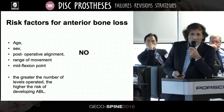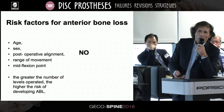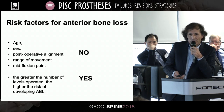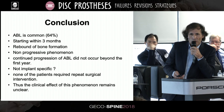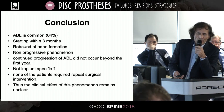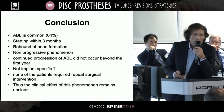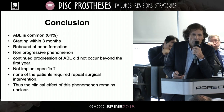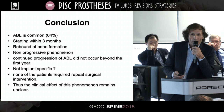There is no correlation with age, sex, post-operative alignment, or range of movement. However, the greater the number of levels operated, the higher the risk of developing ABL. In conclusion, ABL is common. It starts early within three months and follows a non-progressive course with stable radiographic features after one year. There is no correlation with clinical outcomes. Thank you.